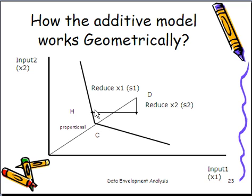The two input slacks. So you actually try to maximize the two slacks. And this is how you end to the frontier. So you get a different projection point on the frontier if you compare the additive model to the regular input-oriented CRS model for example.